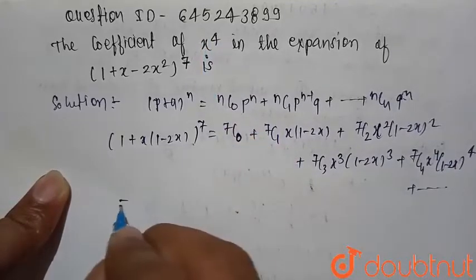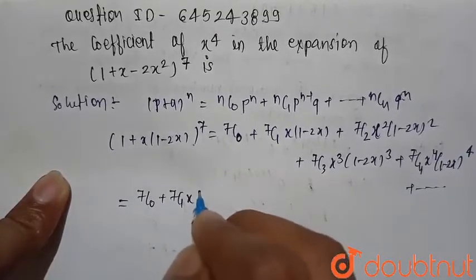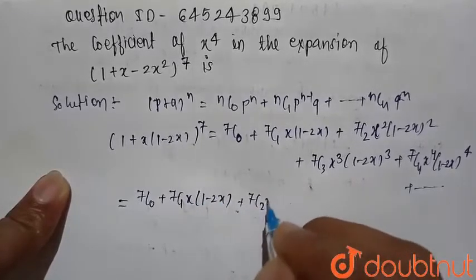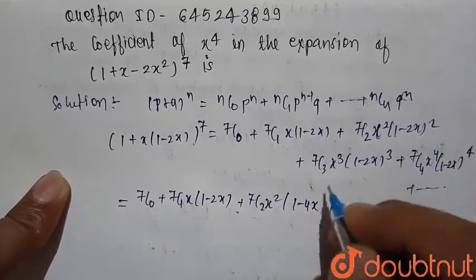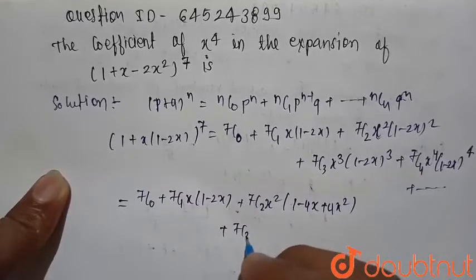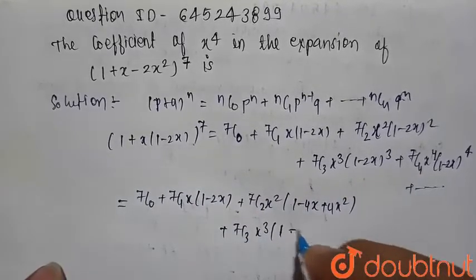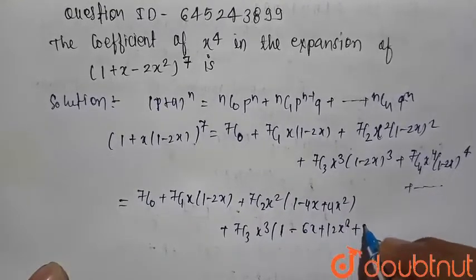So we simplify this. We can write here 7C0 plus 7C1 x into 1 minus 2x, and here 7C2 x squared is multiplied with 1 minus 4x, that is whole square open, so here is 4x squared.